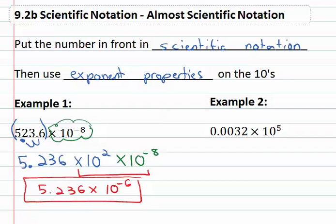Let's take a look at example two. This one's also sort of scientific-ish, but again the decimal point's in the wrong place. So we'll look at that front number and put it in scientific notation.